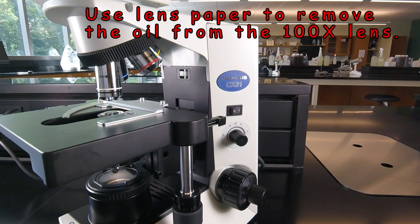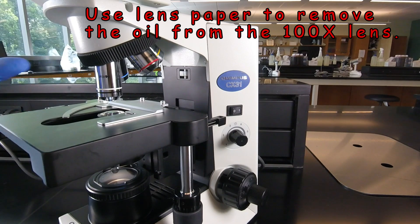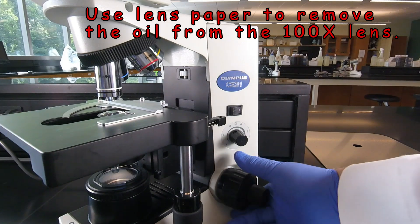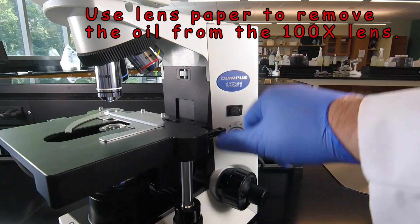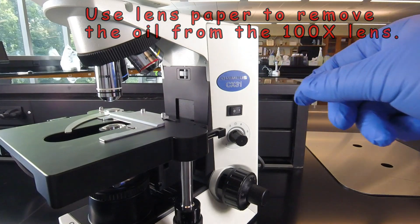Now it's very important that we remove the oil from the oil immersion lens using lens paper, which will be provided of course. When we're ready for that stage, lower the stage, and wipe the oil off the oil immersion lens with the lens paper.